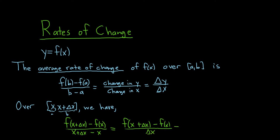And again, you can think of this as the change in y — delta y — over the change in x, delta x. Where, just to be really precise, delta y is the numerator, so it's f of x plus delta x minus f of x. Being really formal here and careful with our definitions.